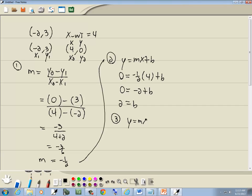Step 3. Plug in the m we found from step 1, which we said was negative 1 half. Plug in the b from step 2, which we said was 2.